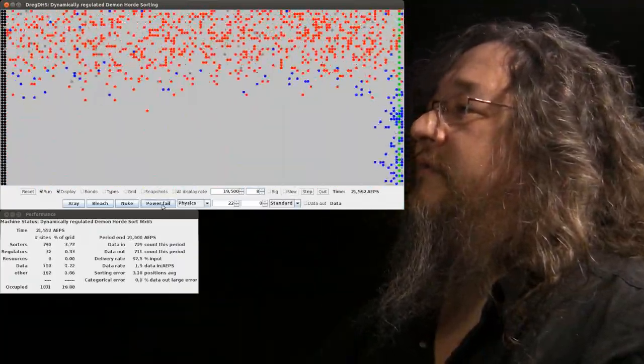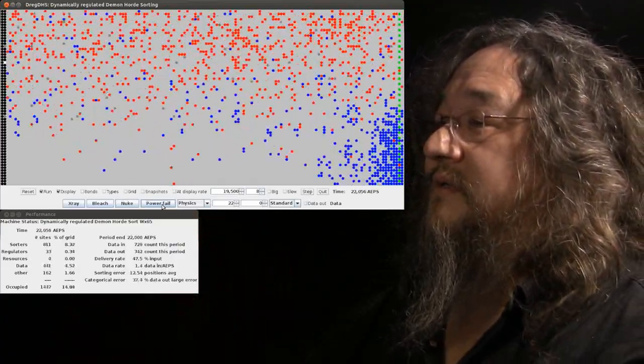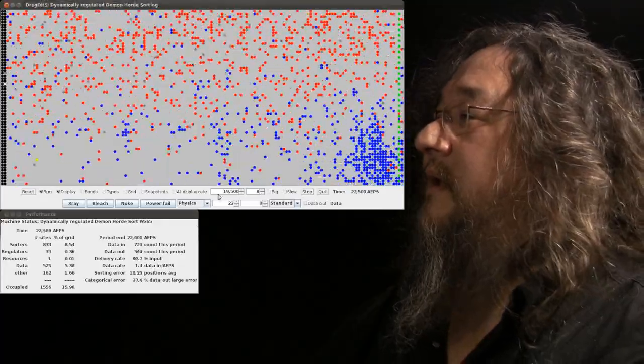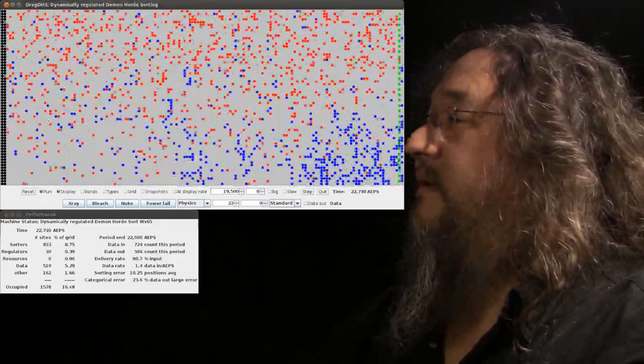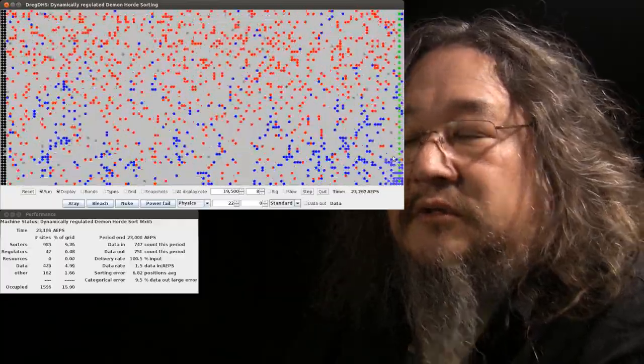We can blow like two-thirds of the entire machine away. And again, now the score is definitely, the categorical error is up to a third. Sorting error is terrible. The thing is getting all jammed up here. So it takes a little longer to recover.